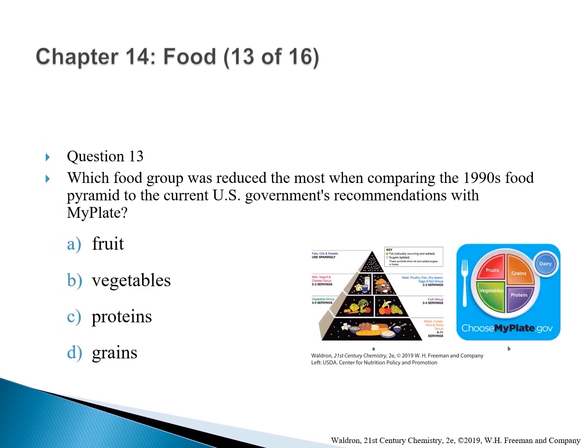Question 13: Which food group was reduced the most when comparing the 1990s food pyramid to the current US government's MyPlate recommendations? The correct answer is D — grains. In the food pyramid, grains was the largest portion; however, in the new MyPlate, grains make up about a quarter of the plate.